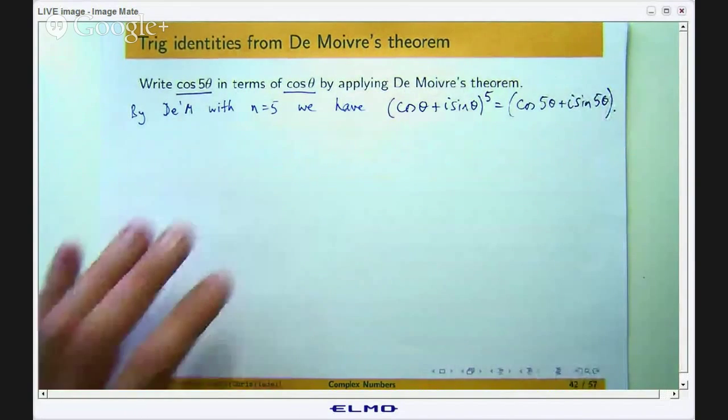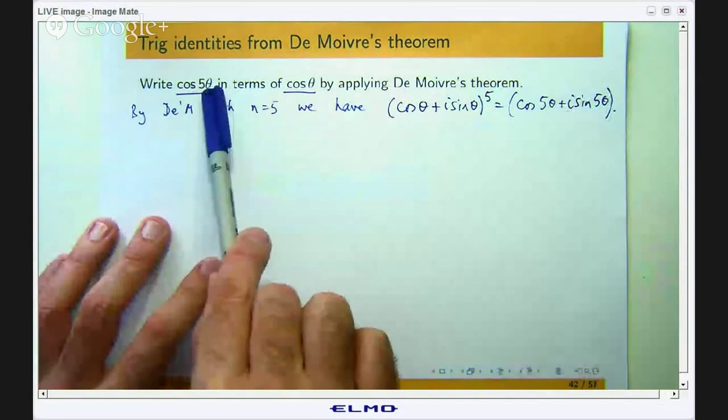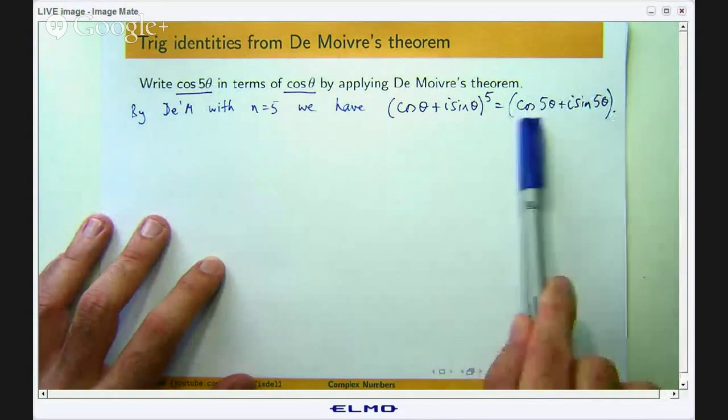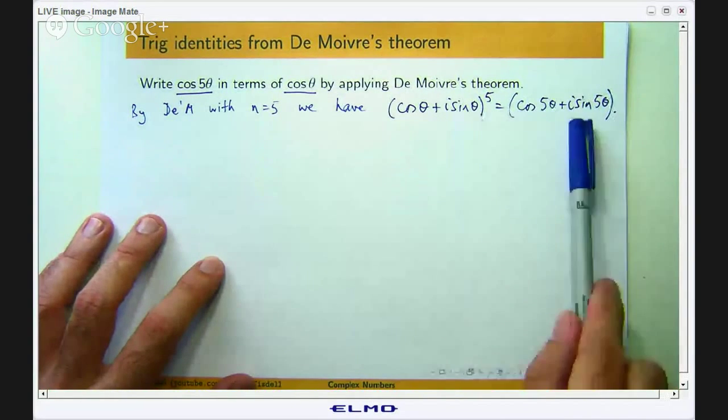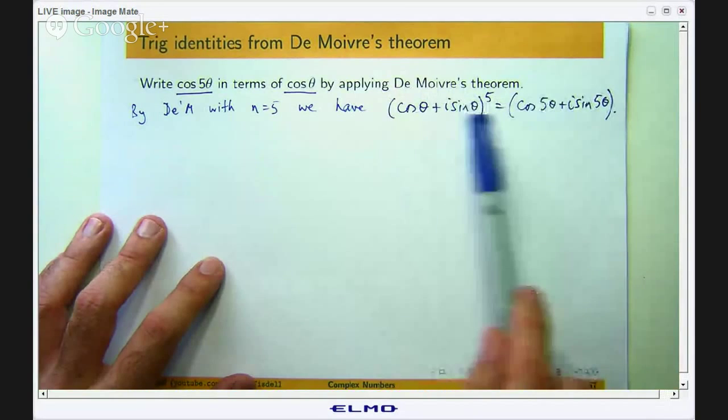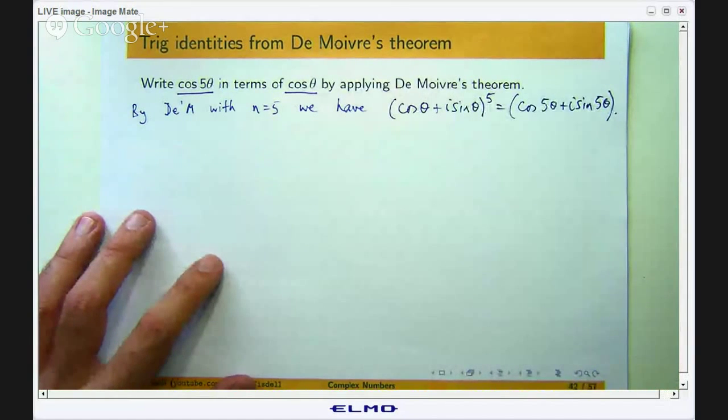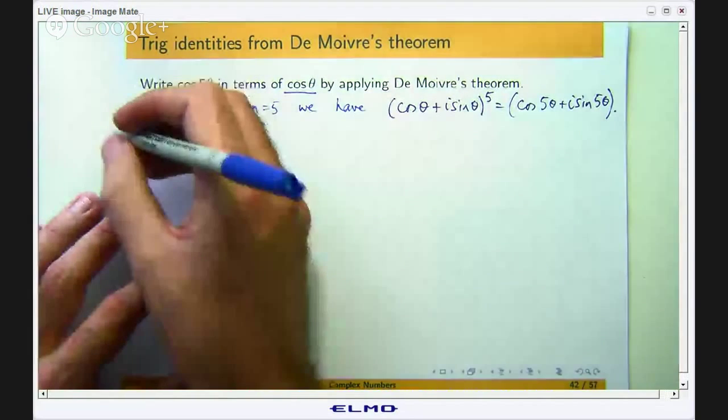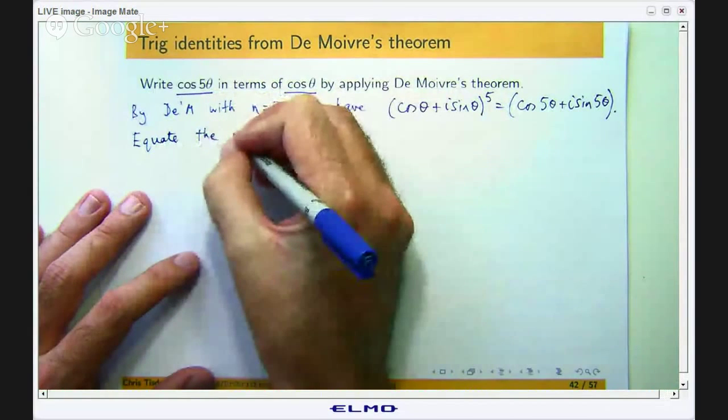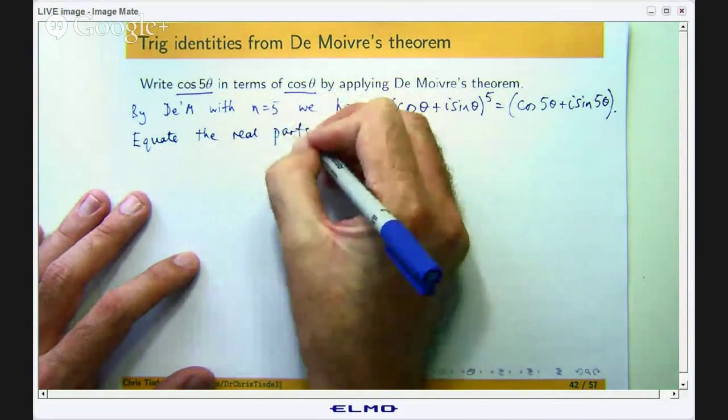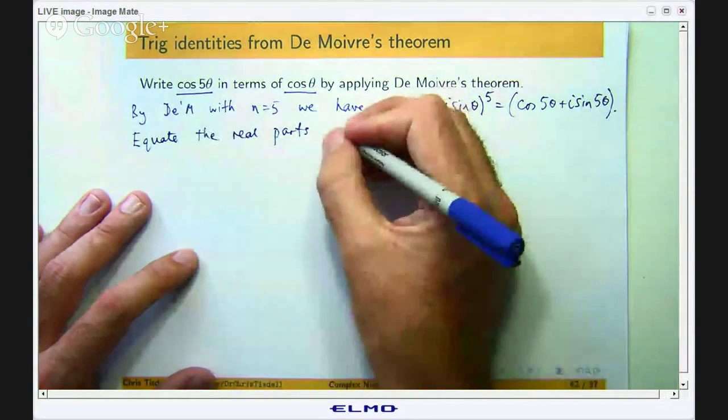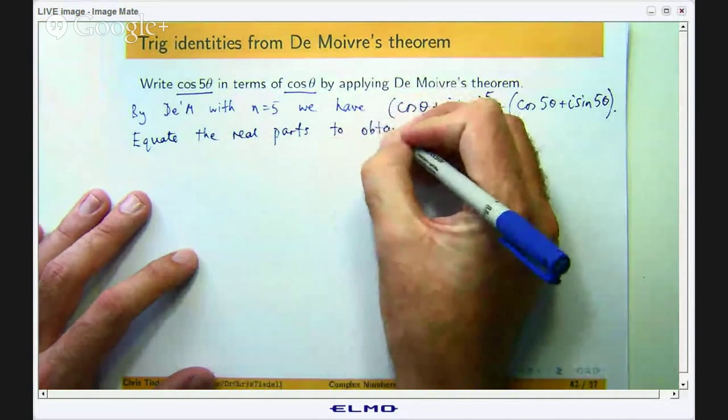So let us apply de Moivre with n equals 5 and then we will get the following. We have got a cos 5θ there and we want to write this in terms of cos θ. Now cos 5θ is the real part of this right hand side. Because these two expressions are equal, this will be a complex number and so will this. The real parts of both sides have to be equal. So equate the real parts. If you wanted sin 5θ you would equate the imaginary parts.